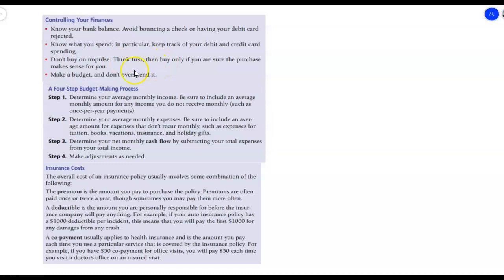So the first part is controlling your finances. Know your balance, avoid bouncing a check or having your debit card rejected. Remember, banks charge absorbent fees right now every time you bounce a check or overdraw your account. It can be $40 per time that you do it, and then suddenly you have a negative balance. And then you have to pay off that balance before you can actually get any money to spend. It's a pretty vicious cycle that a lot of people go through.